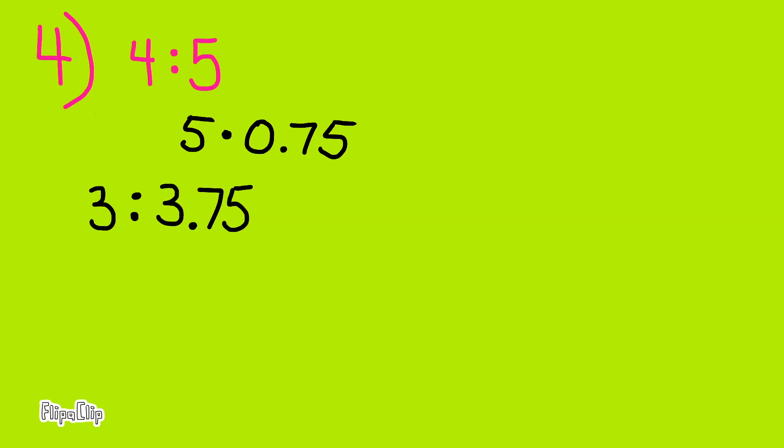The ratio of 4 to 5 is equivalent to the ratio of 3 to 3 and 75 hundredths. Here's another way to do it. Since 4 divided by 7 does not equal 5 divided by 8, then the ratio of 4 to 5 is not equivalent to the ratio of 7 to 8.